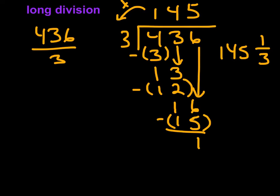So my answer would be 145 with 1 over 3, because you take your remainder and put it over your divisor. Now that we reviewed how to do it with real numbers, let's look at a polynomial.